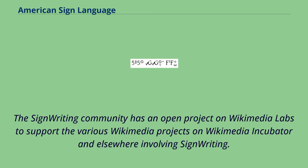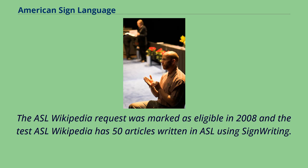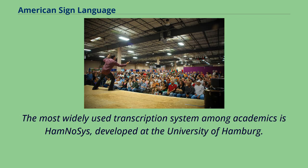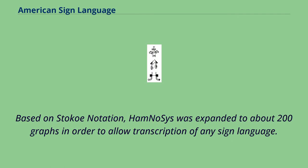The sign writing community has an open project on Wikimedia Labs to support various Wikimedia projects involving sign writing. The ASL Wikipedia request was marked as eligible in 2008, and the test ASL Wikipedia has 50 articles written in ASL using sign writing. The most widely used transcription system among academics is HamNoSys, developed at the University of Hamburg. Based on Stokoe notation, HamNoSys was expanded to about 200 graphs in order to allow transcription of any sign language.